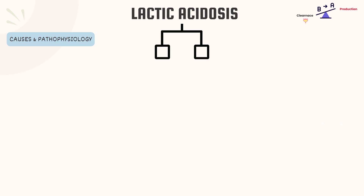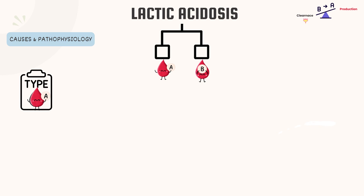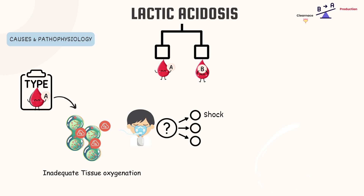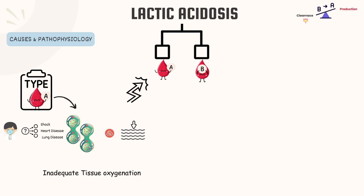Lactic acidosis can be categorized into two main types: type A and type B. Type A lactic acidosis is often associated with inadequate tissue oxygenation. Conditions that lead to poor oxygen delivery to tissues, such as shock, severe heart or lung disease, can trigger type A lactic acidosis. When tissues don't receive enough oxygen, they switch to anaerobic metabolism, producing lactic acid as a result.